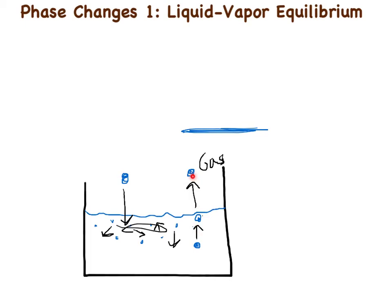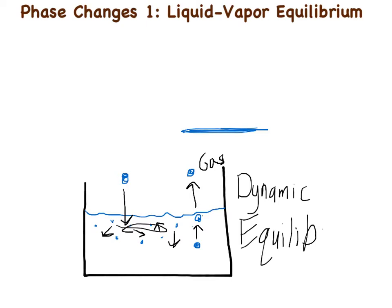Sooner or later, the rate that the water molecules are evaporating is going to equal the rate that the water molecules are condensing. Once these two rates equal each other, the liquid will stay constant and the water vapor in the air will stay constant. We reach what's called a dynamic equilibrium — the rate of the forward process is exactly balanced by the rate of the reverse process. That's why the ocean isn't evaporating: it is evaporating, but it's also going back from gas to liquid at the same rate, so the water volume stays constant.